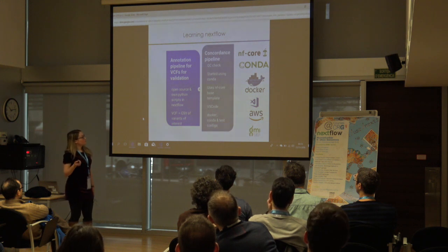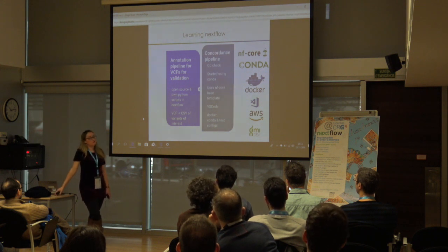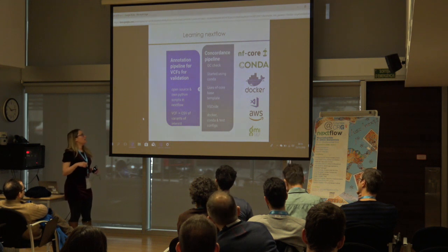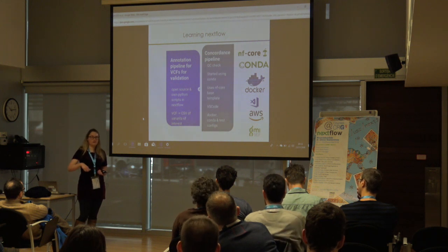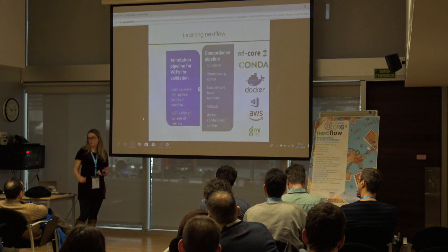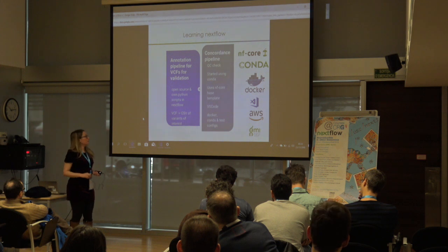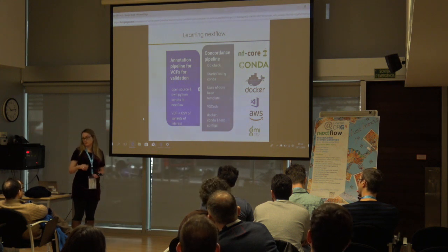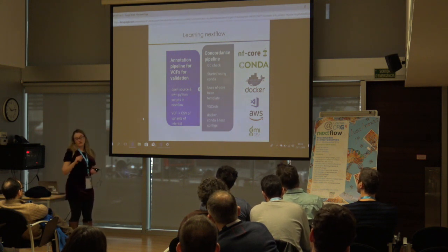At GMI we started sequencing and needed to validate our pipeline, and we also wanted to go for CAP accreditation. We already had the secondary analysis pipeline done from FASTQ to VCFs. For the CAP proficiency test, they send you a sample, you sequence it, and they have a list of variant sites they want you to report. I wrote a Nextflow script to do annotation and a Python script to pull out variants of interest. It was nice, automated, and reproducible.